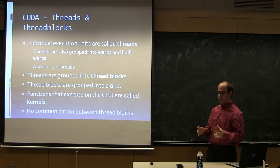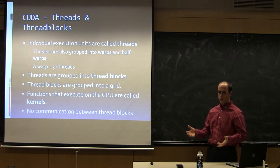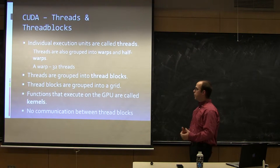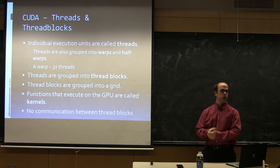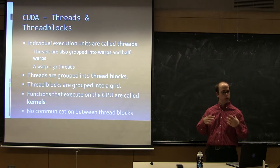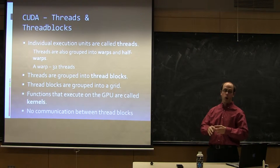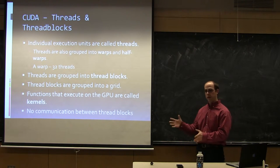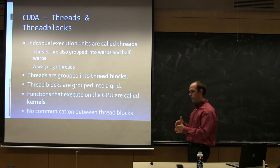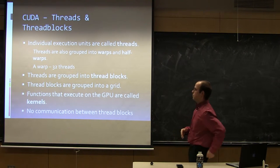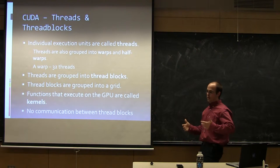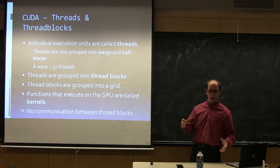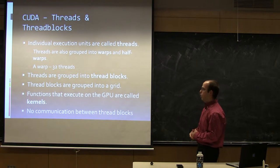So now you have your program, and you want to launch a bunch of threads. Well, you group them into something called thread blocks. And typically, you put 128 threads, 256 threads, or some power of 2 into a thread block, and then you create however many thread blocks you need to cover your data space. And that, however many thread blocks you need is called a grid.